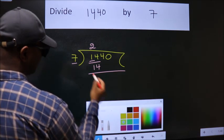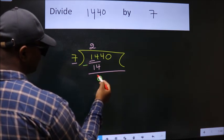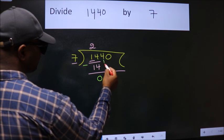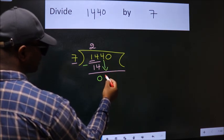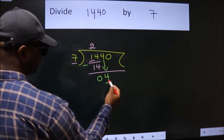Now we should subtract. We get zero. After this, bring down the beside number, so 4 down. Here we have 4.